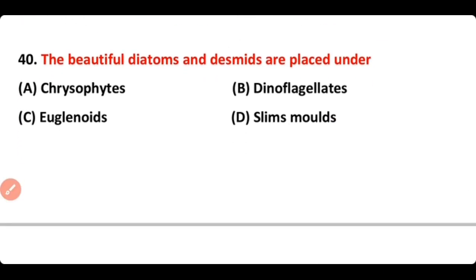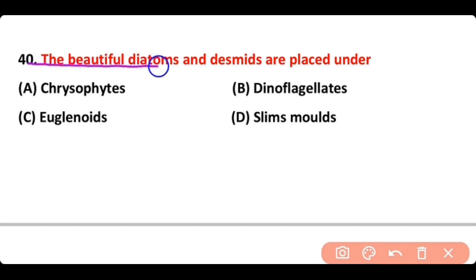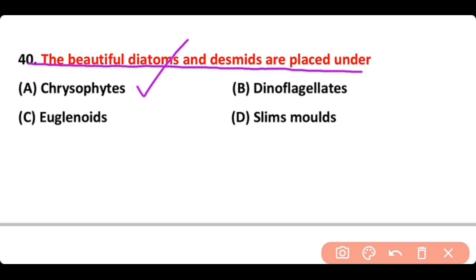Question number 40: The beautiful diatoms and desmids are placed under — Chrysophytes, Dinoflagellates, Euglenoids, or Slime Molds? The correct answer is option A. Diatoms and desmids are placed under Chrysophytes.